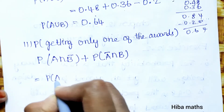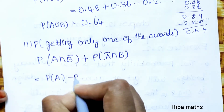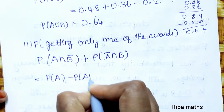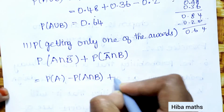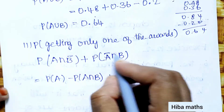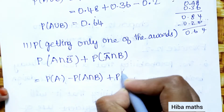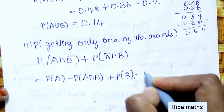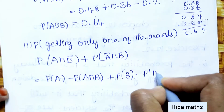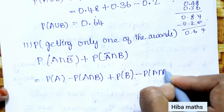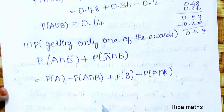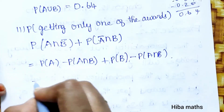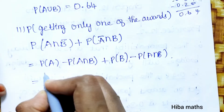P(A∩B') = P(A) − P(A∩B), and P(A'∩B) = P(B) − P(A∩B).